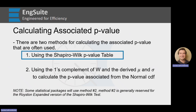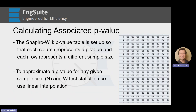We're going to use the first method. Some statistical packages will use method 2, but method 2 is generally reserved for the Royston-expanded version. We'll go over what method 2 means next week in our video on the Royston-expanded Shapiro-Wilk test. But for today, let's take a look at the Shapiro-Wilk p-value table.